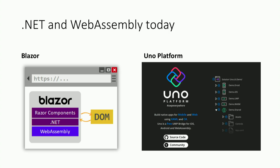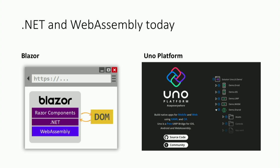Two of the most exciting prototypes with WebAssembly are the Uno Platform — that's what we're here for — and Blazor, a new programming model for web pages where you bring ASP.NET and run it entirely on the client side. There's a lot of enthusiasm for that style of development. We're supporting the Blazor folks and they're giving us a list of bugs to fix and things to improve the experience.